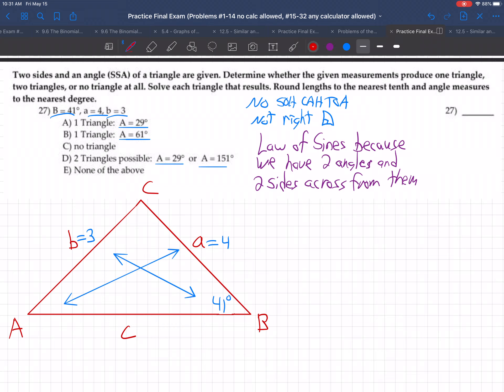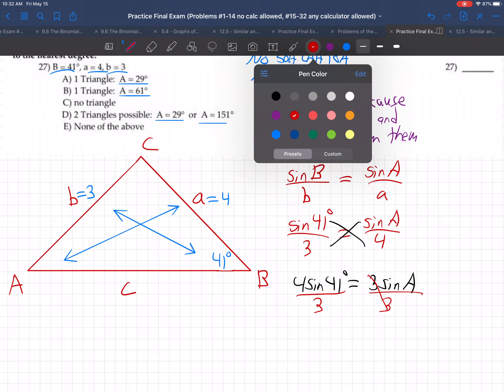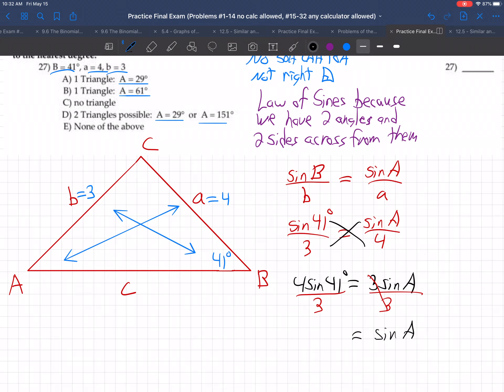So I'm going to say then that the sine of B over little b is the sine of capital A over little a. So that's going to be the sine of 41 degrees over 3 equals the sine of capital A over 4. And then you solve this by cross-multiplying. So 4 sine 41 degrees is 3 sine capital A. Now to solve for capital A, you've got to divide both sides by 3. And so we get sine of A is 0.8747.